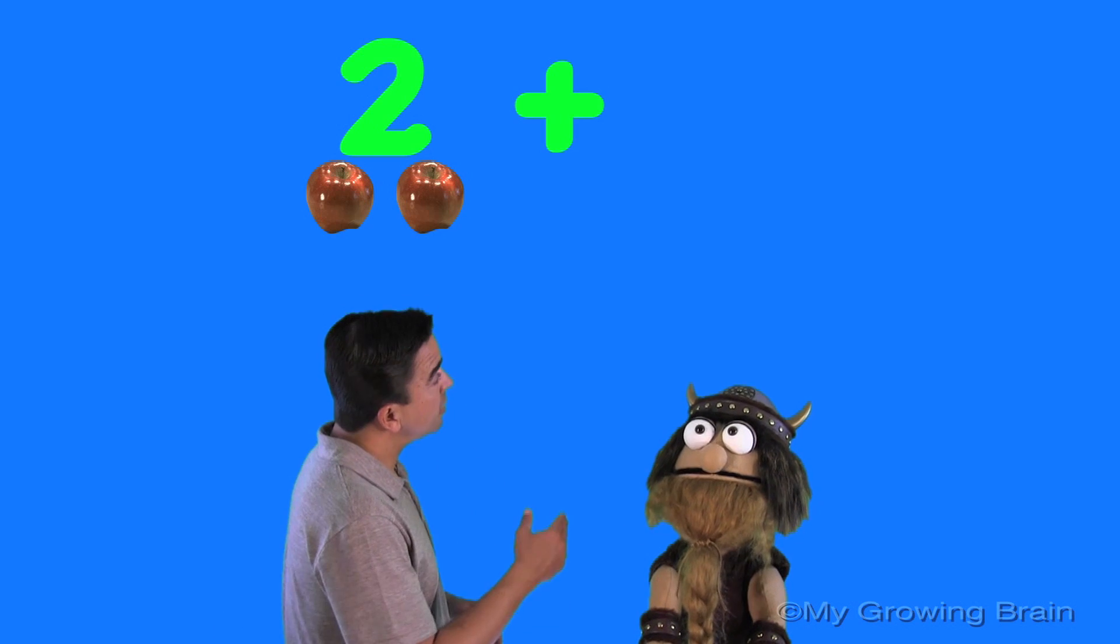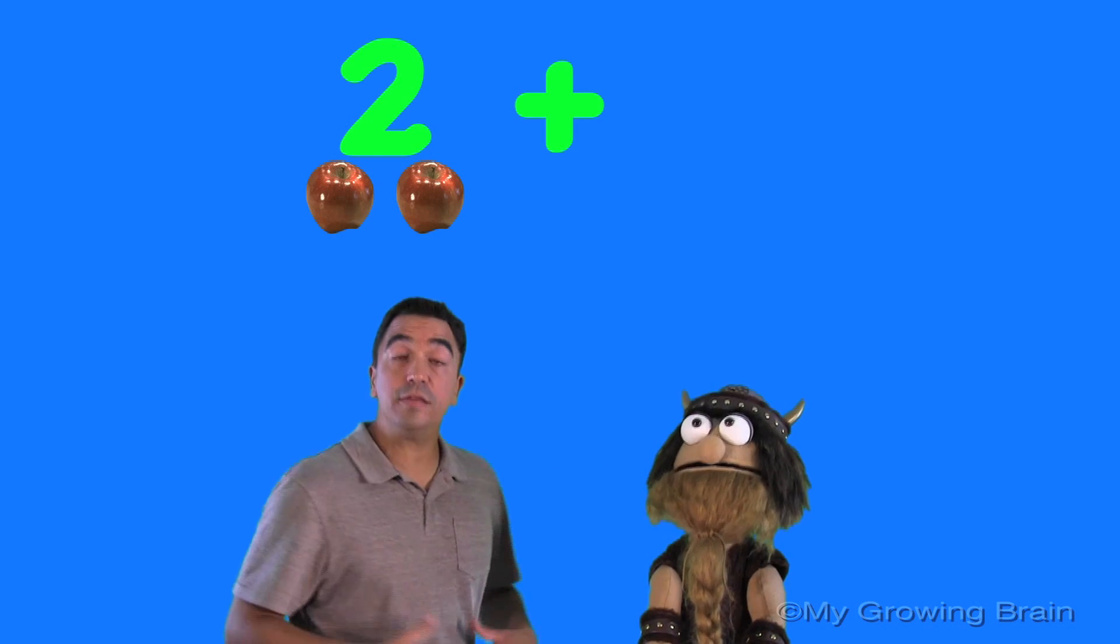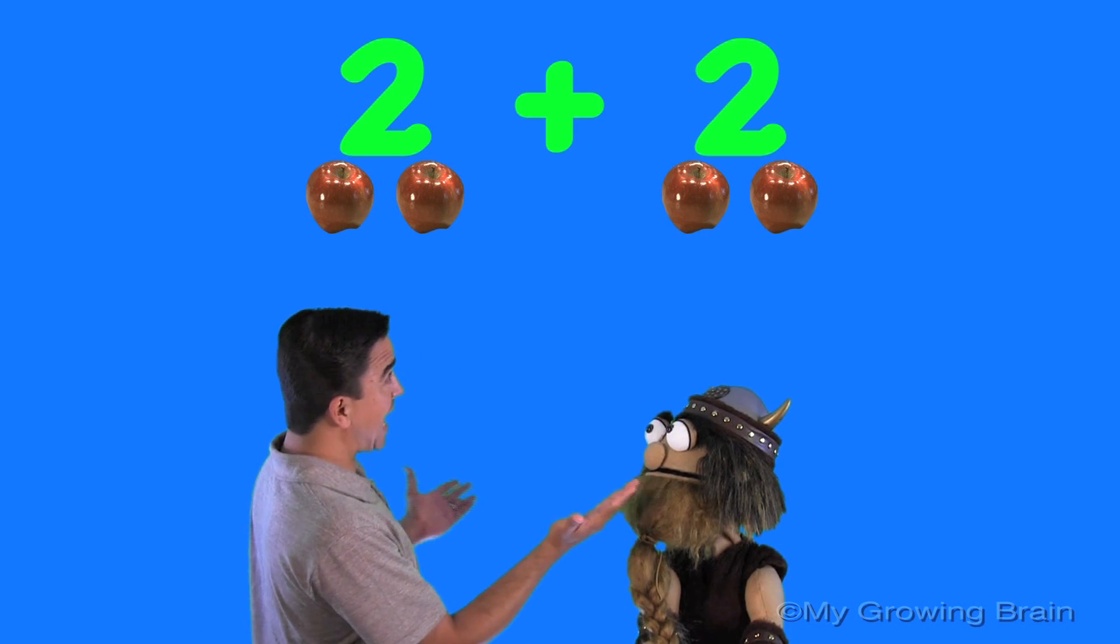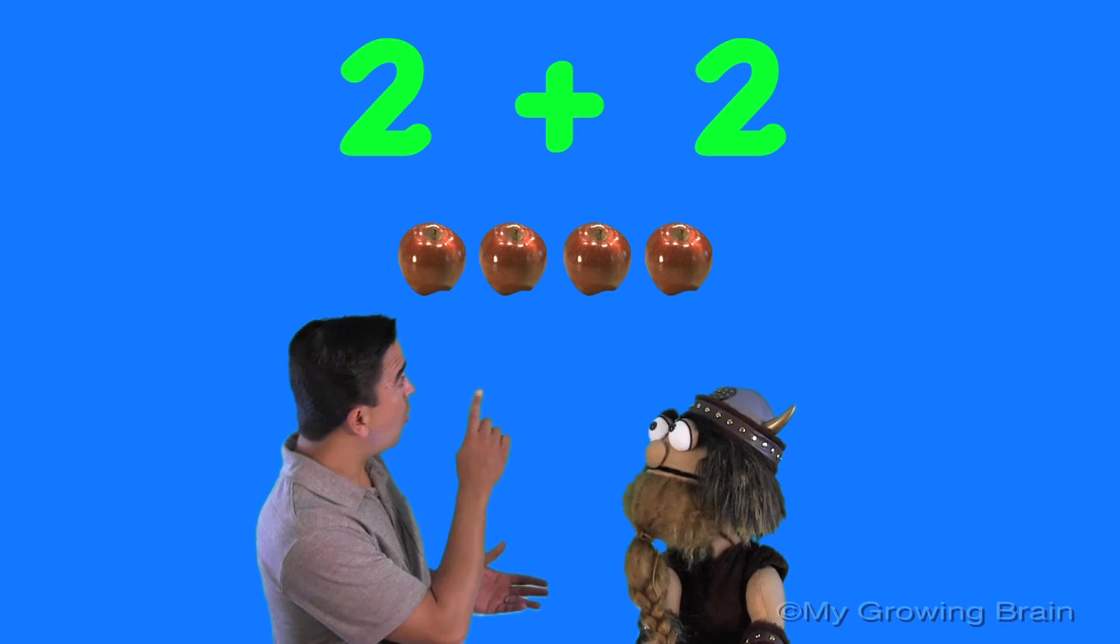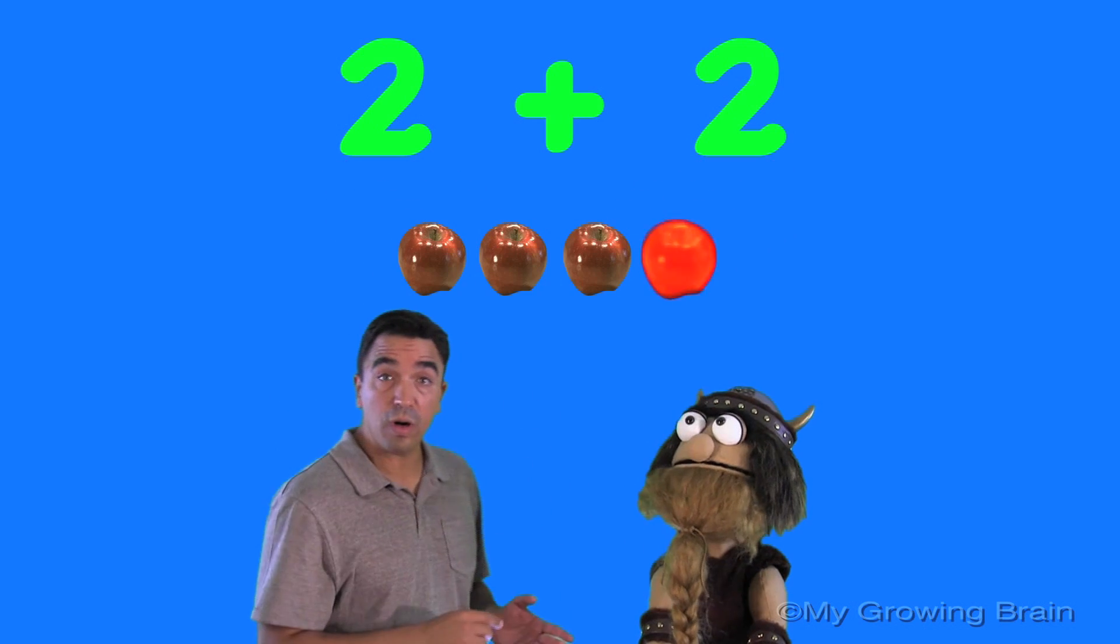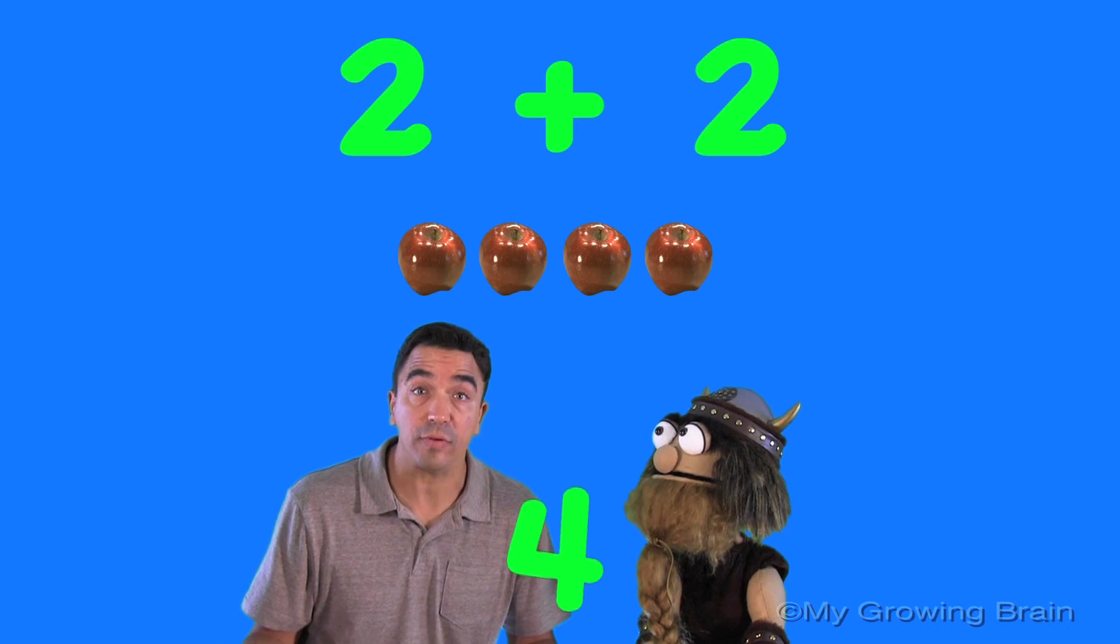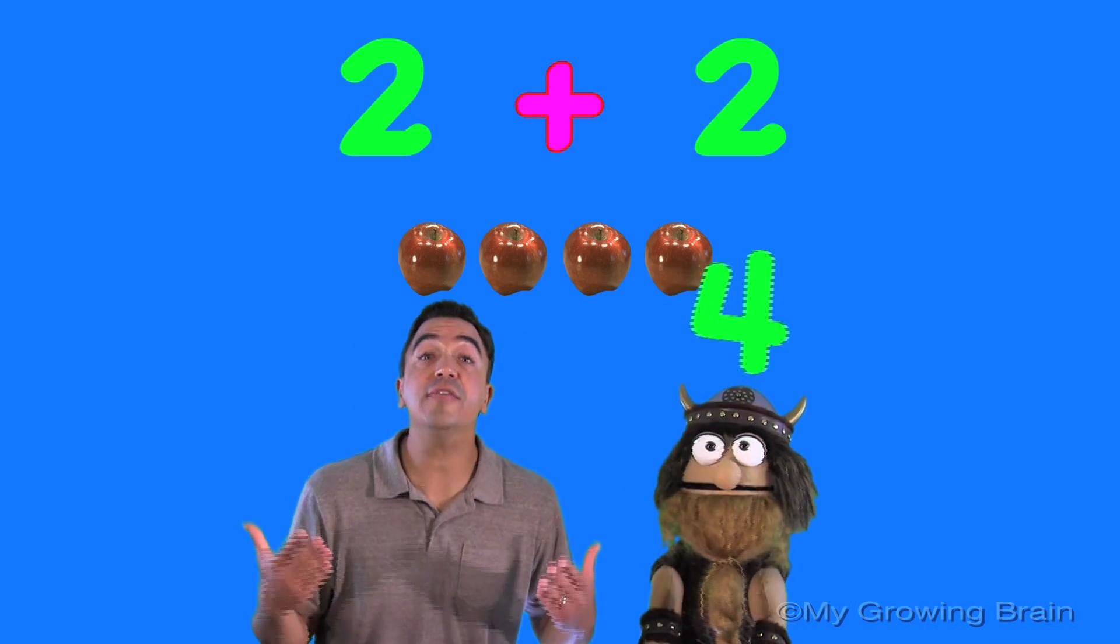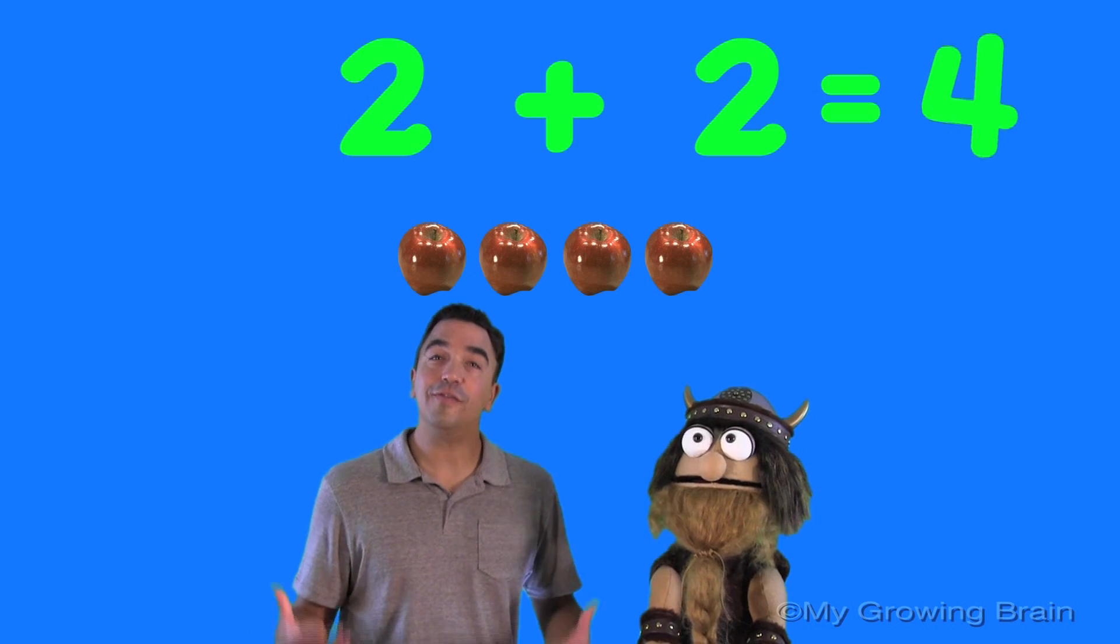And then over there we have another group of apples. One, two. Well, now we join the apples together. One, two, three, four. There are four apples. Therefore, two plus two is four.